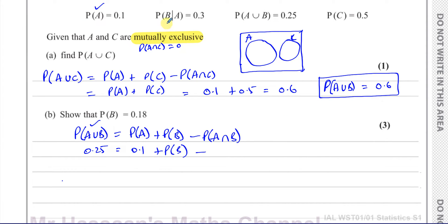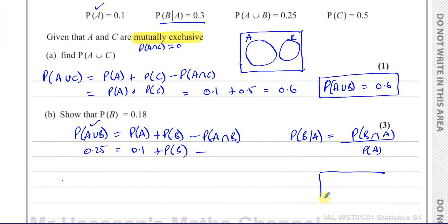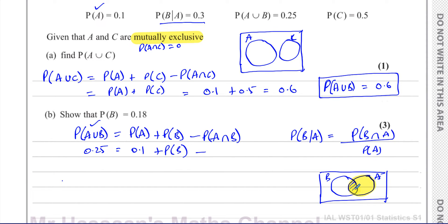The information that helps us is the conditional probability: P(B|A) = P(A∩B) / P(A). When we say 'given A', we limit the sample space to just A, and we're only looking at the part of B which is inside A — that's the intersection of B and A. So P(B|A) gives us P(A∩B) once we know P(A).